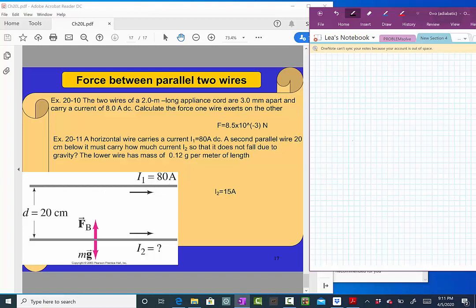We have a second wire that is 20 centimeters below, so the distance between the wires is 20 centimeters. It's also carrying a current I2, and if you look, this current is in the same direction as I1.